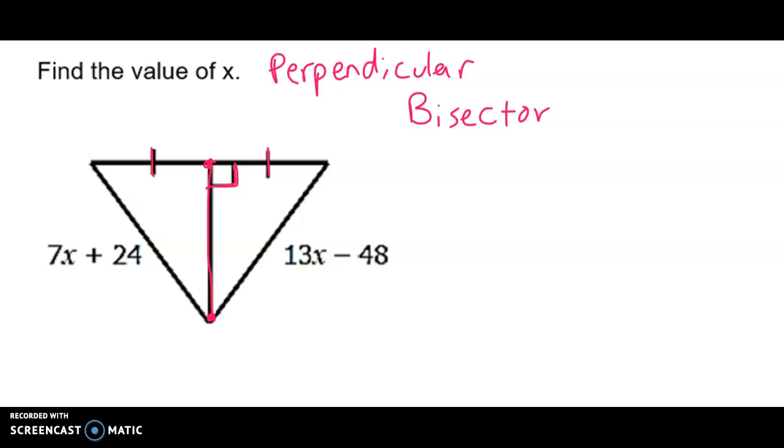Now one thing we also know about perpendicular bisectors is that if it is cutting an isosceles triangle in half, if it does actually cut it in half and you can see it goes through the vertex, if it goes through the vertex specifically then we know that we have an isosceles triangle where the two sides are equal.